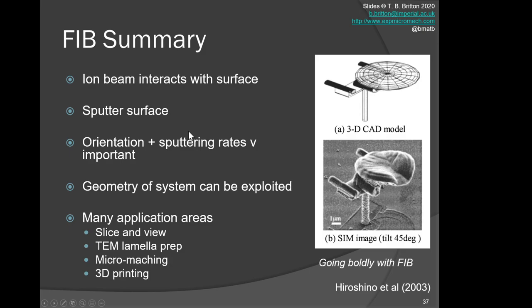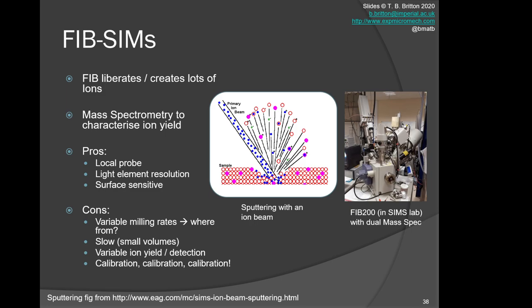To summarize what we've got to: in FIB, we've got ion beam interacting with surface. We can sputter away the surface. The ion beam is orientation and sputtering rates are very important for the material system. The geometry of the system can be exploited. There's a significant range of application areas, so we can get slice and view, we can do TEM lamellar prep, we can micromachine samples, we can 3D print samples. A whole range of applications that we want to use—this is now a very universal technique and approach.